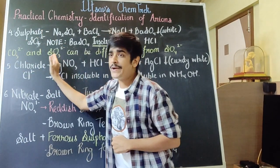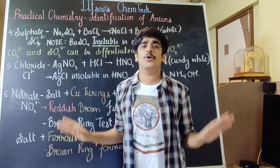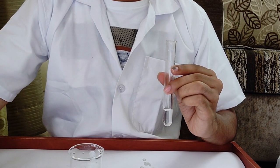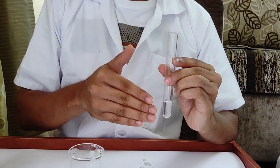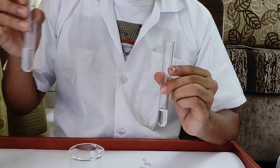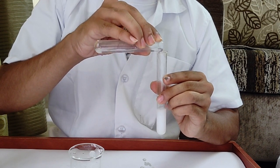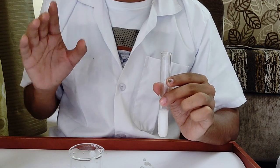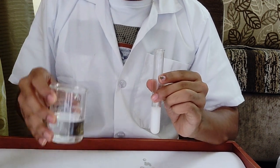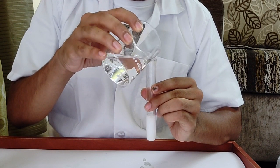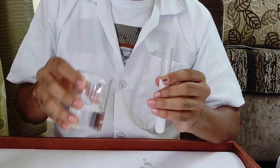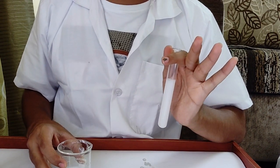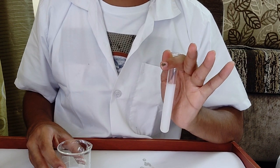Differentiating between carbonate and sulfite using this test alone is not possible. To test the sulfate radical, we again take barium chloride solution and whenever a metallic sulfate solution is added to it, you again expect the formation of a white colored precipitate — but this time the precipitate is slightly different. If dilute hydrochloric acid is added to this precipitate, you will see that there is absolutely no difference — even if you shake the test tube, the precipitate remains exactly the same, which means it is insoluble.